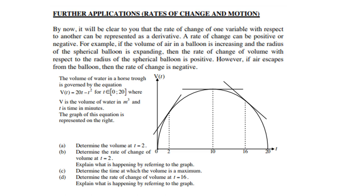Now, A. Determine the volume at t equals 2. Secondly, determine the rate of change of volume at t equals 2. Explain what is happening by referring to the graph. C. Determine the time in which the volume is maximum. D. Determine the rate of change of the volume at t equals 16. Explain what is happening by referring to the graph.